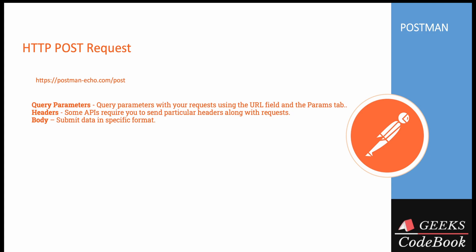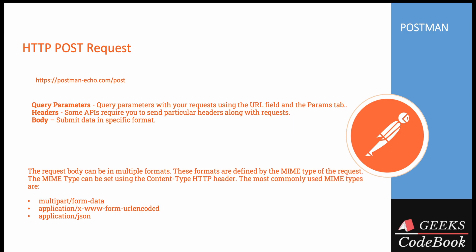In a POST request you can use query parameters, just as with GET requests, and you also have headers. The actual data is submitted as part of the body, and there are a number of formats for doing so. At a high level, the body format is defined using MIME types. The most commonly used MIME types are multipart/form-data, application/x-www-form-urlencoded, and JSON.